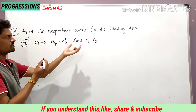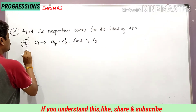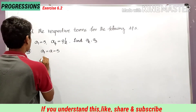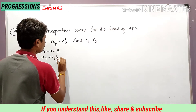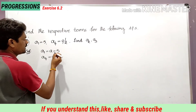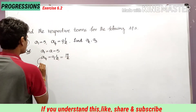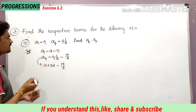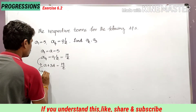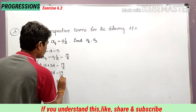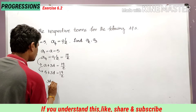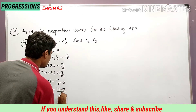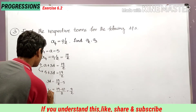a1 itself is 'a', so a is equal to 5. a4 is equal to 9 and a half — convert this mixed fraction to improper: 2 nines are 18 plus 1 gives 19 divided by 2. a4 can be written as a plus 3d, so 5 plus 3d is equal to 19 by 2. Taking 5 to the right side: 3d equals 19/2 minus 5. Finding LCM: (19 minus 10)/2 equals 9 by 2. So 3d equals 9 by 2. Cancelling 3, d is equal to 3 by 2.